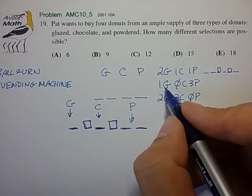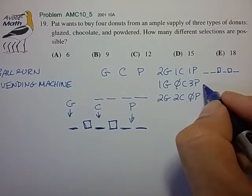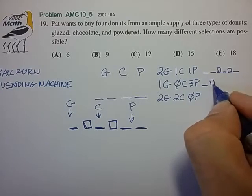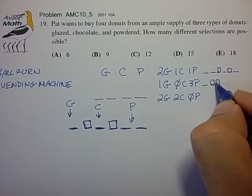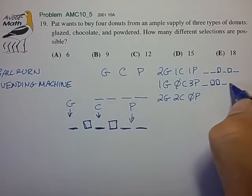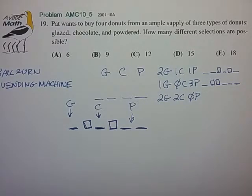Likewise, the glazed and the three powdered would look like one glazed, now two separators because there's no chocolate, followed by three slots to indicate the powdered doughnuts.